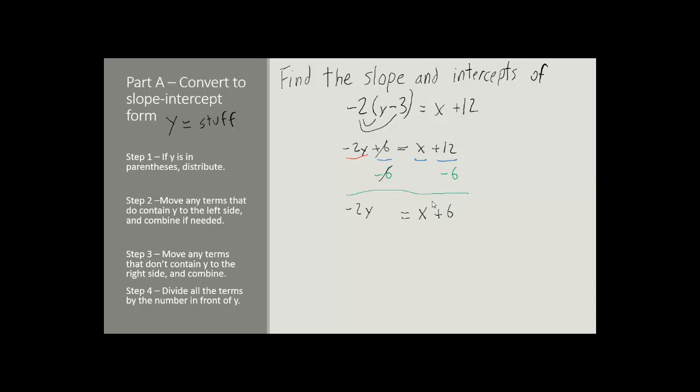One more step. We might notice we have a number still in front of y, so y is not completely by itself just yet. So now we divide all three terms, the negative 2y, the x, and the plus 6, all over that negative 2. So let's do our divisions. Negative 2y over negative 2. That lets us cancel out the negative 2, giving us just y, which is exactly what we wanted.